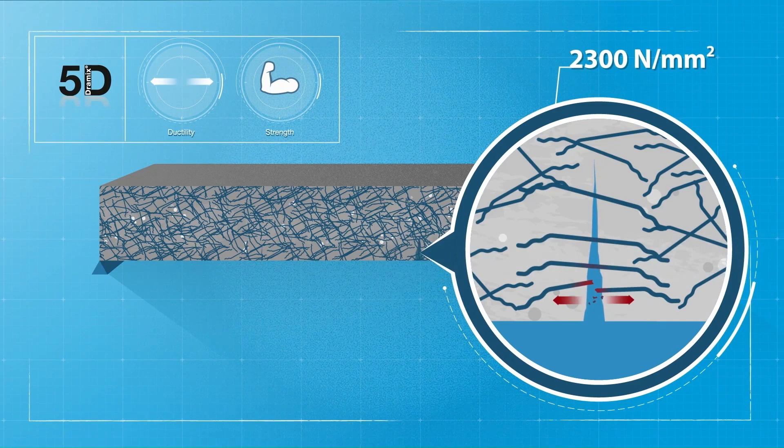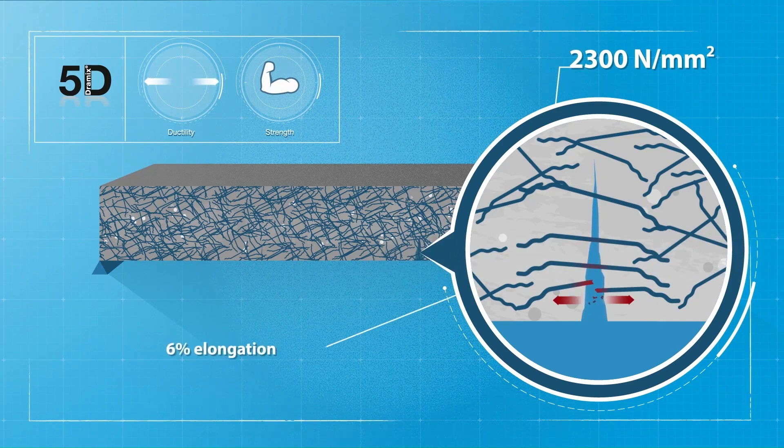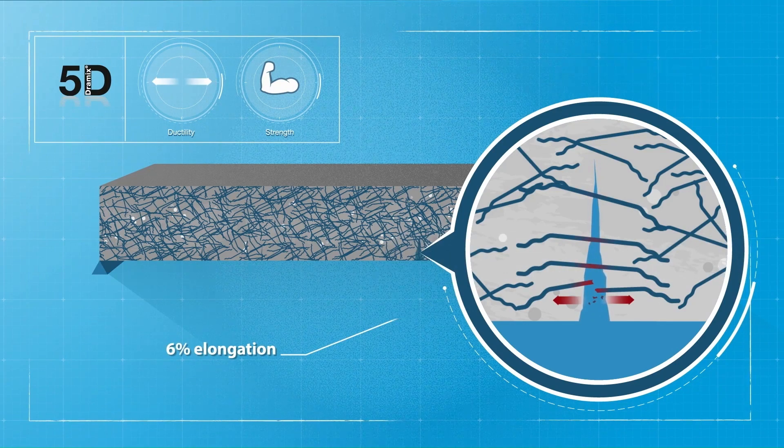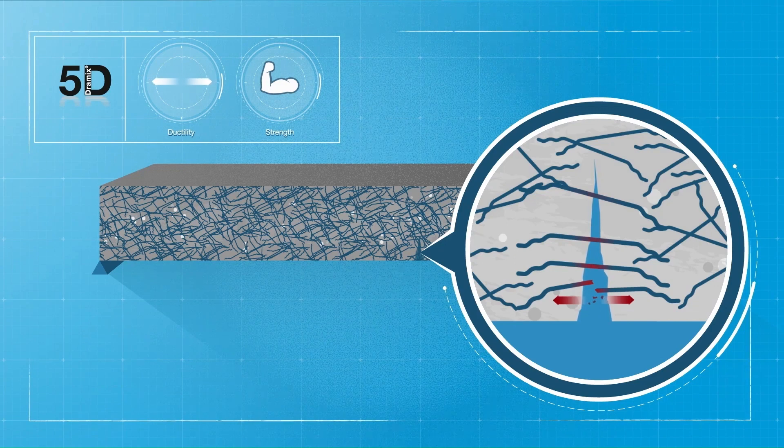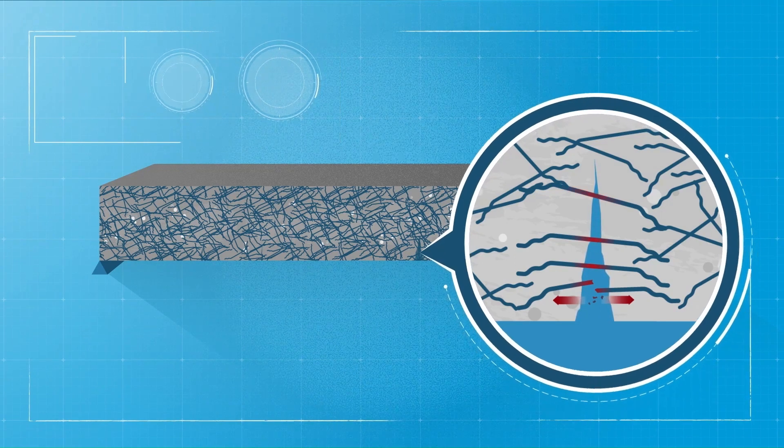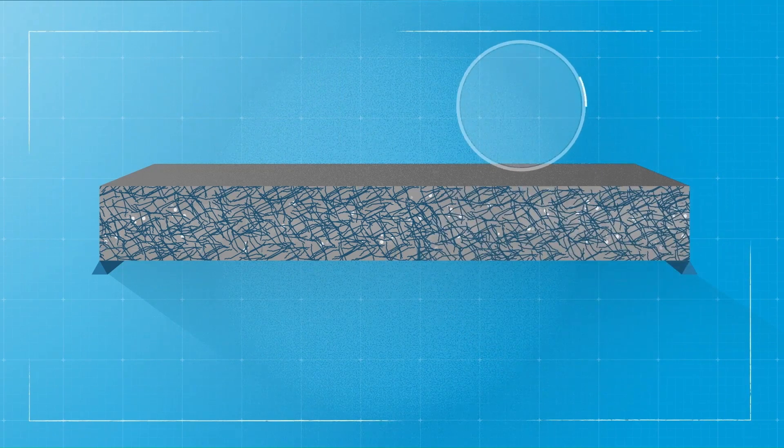With a tensile strength of 2300 Newton per square millimeter and elongation of 6%, concrete structures reinforced with 5D can take high flexural stresses over a long period. Based on these behaviors,